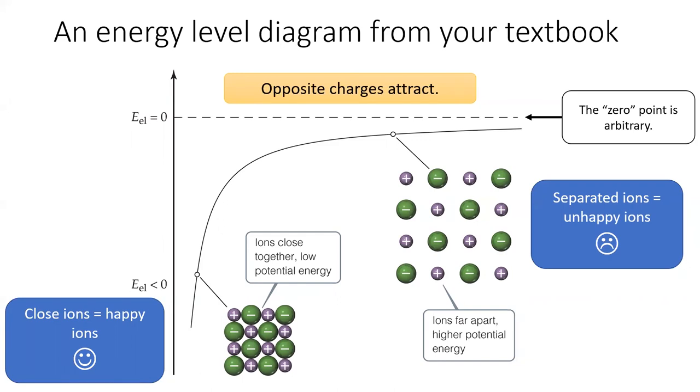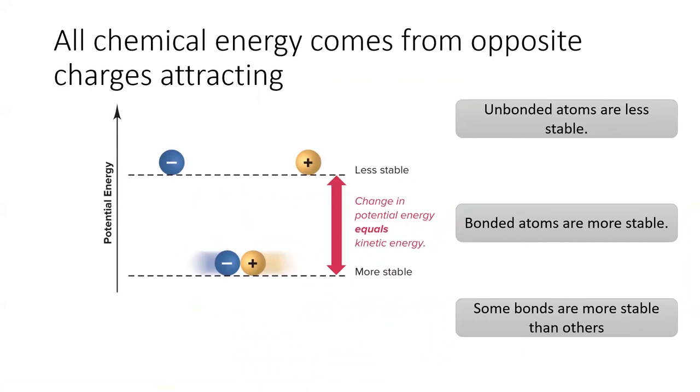Chemists are much more interested in changes in energy than in any absolute measurement of energy. The author of this diagram decided to set zero equal to the potential energy of the ions if they were infinitely separated. As the ions get closer, their potential energy decreases. All chemical reactions can be explained by Coulomb's principle that opposite charges attract and like charges repel. All chemical energy comes from the attraction of opposite charges.